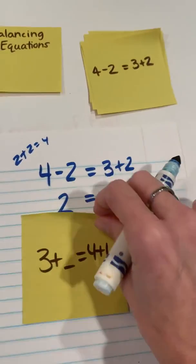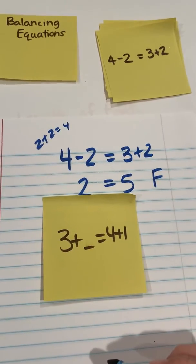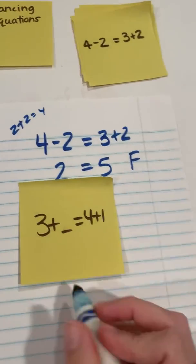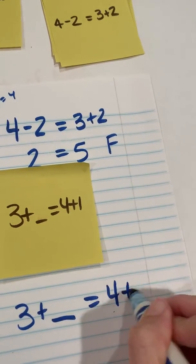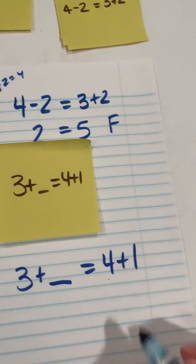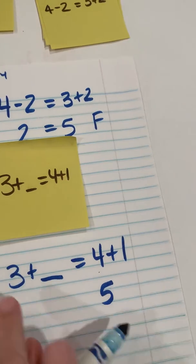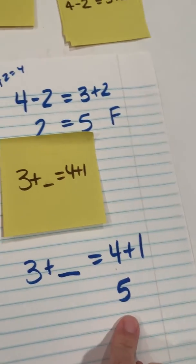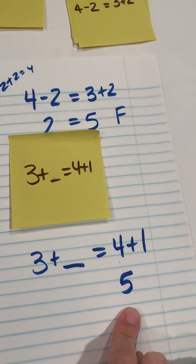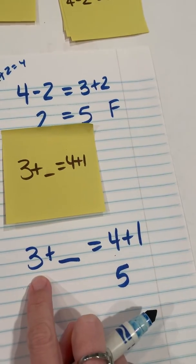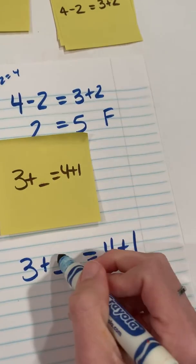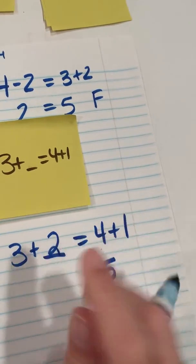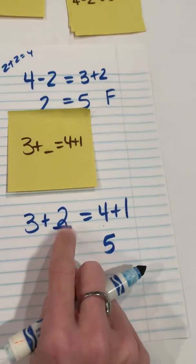Now, what if we have 3 plus what is equal to 4 plus 1? So 3 plus, we have a missing addend, 4 plus 1. Well, I know 4 plus 1 is 5. And then I start thinking, 3 plus what is 5? If I know my facts, I may automatically know that a 2 needs to go there. I can also count up. So those are just different strategies that students could use to be able to solve that, to make it true.